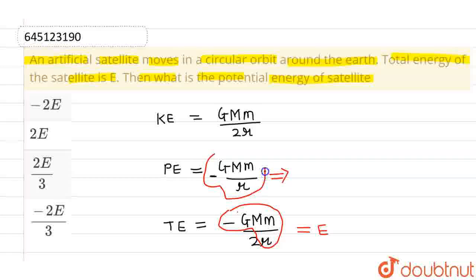And this is also written as minus G M m by r, so its value will also be equals to 2E. This value will also be equals to 2E.